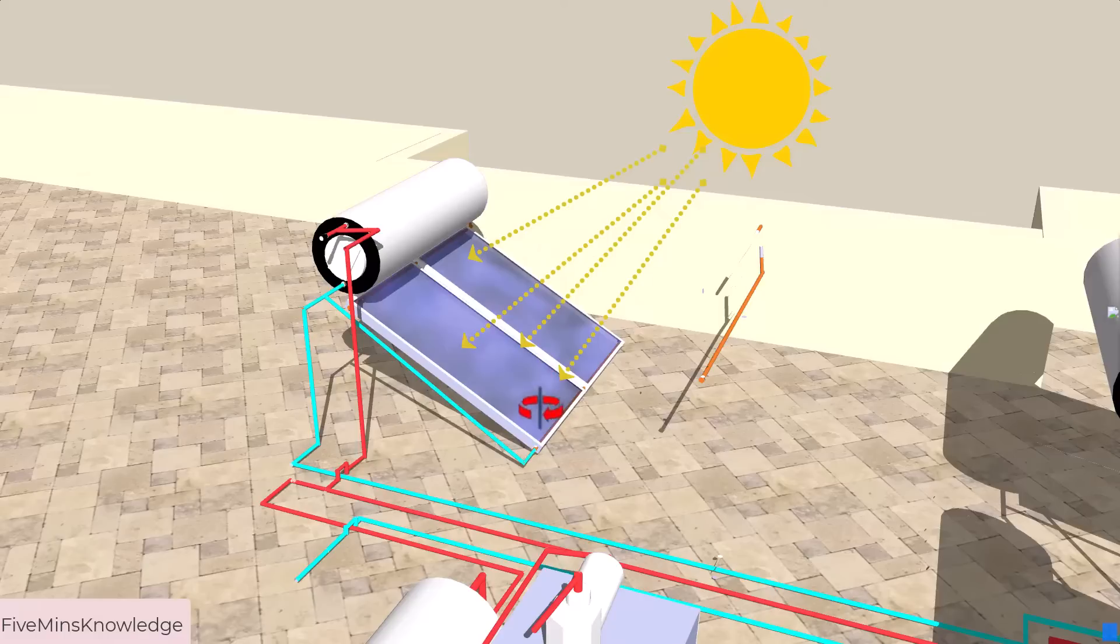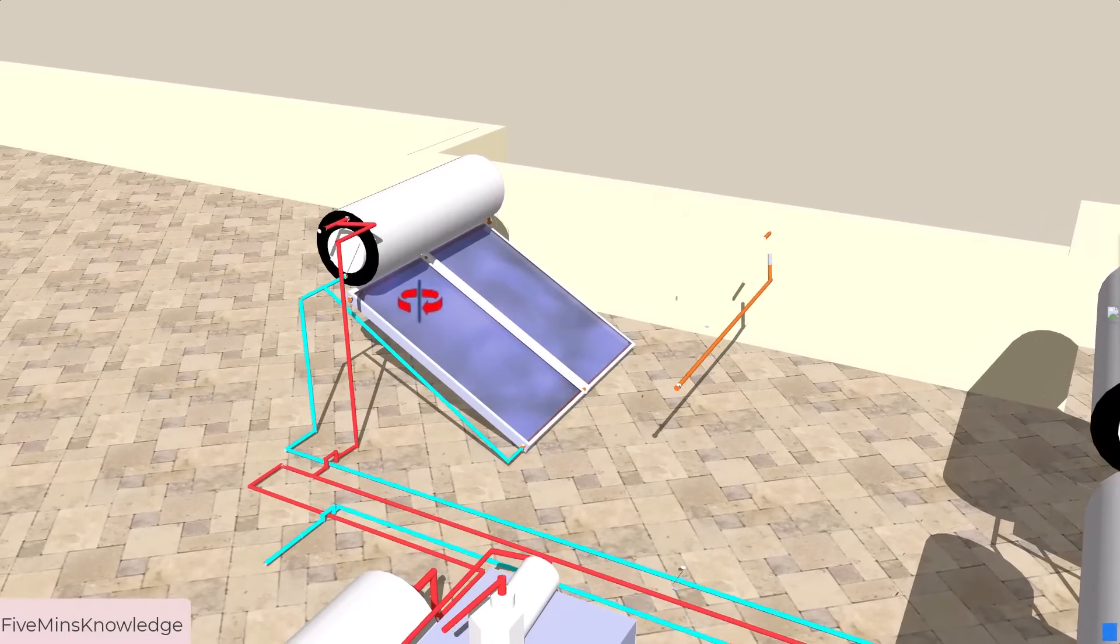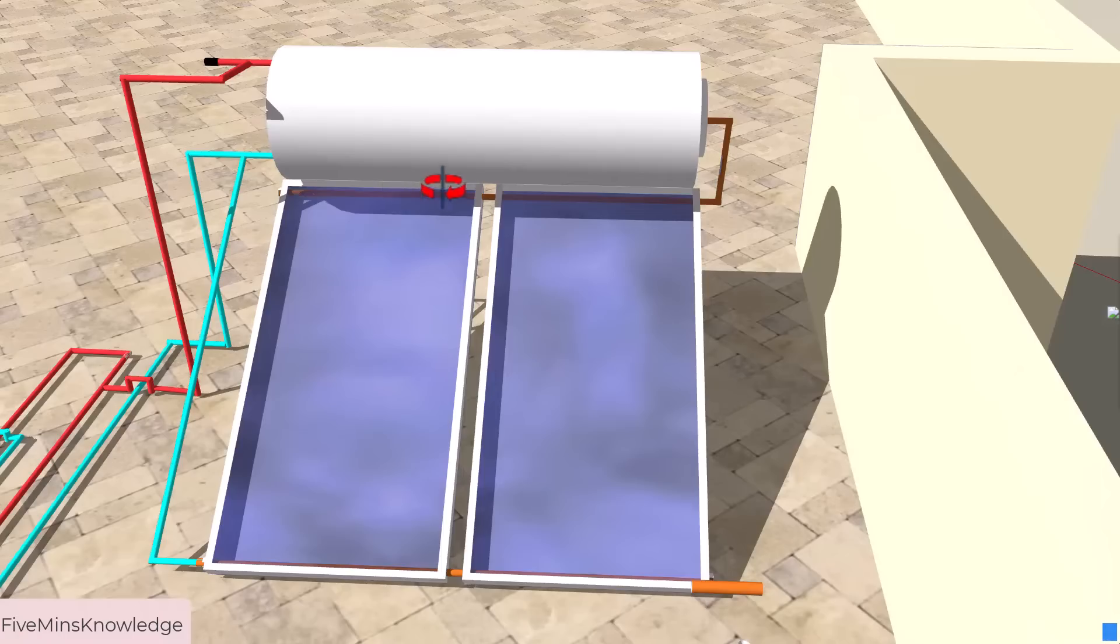Then cold water will absorb the heat from sunlight and heated up, its density will be lighter. Weight will decrease and the hot water will flow upstream, goes to the tank through this pipe.